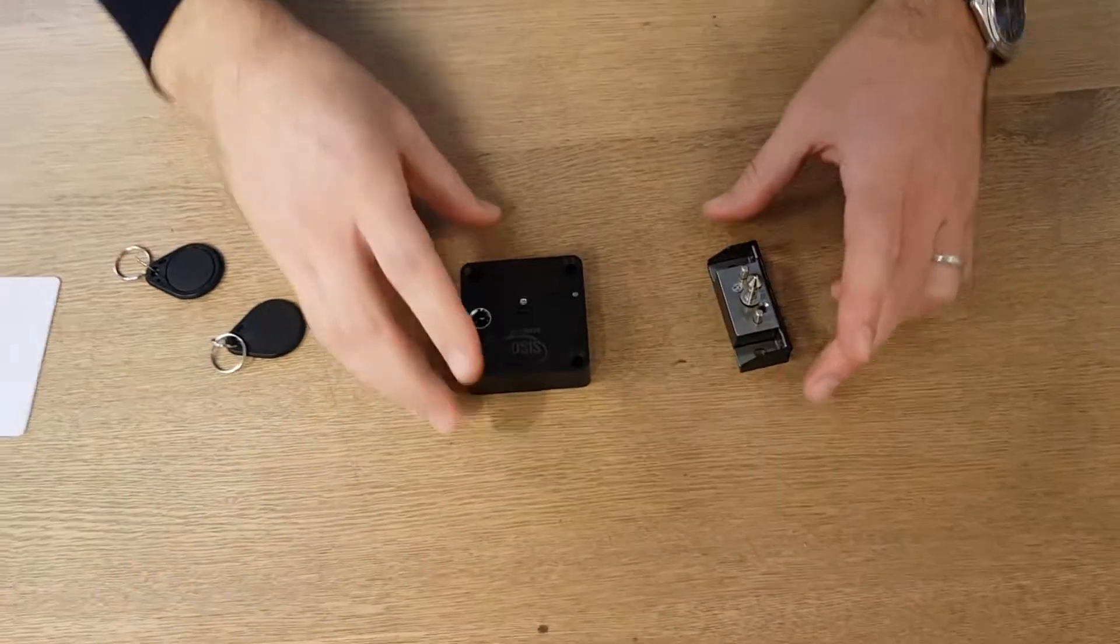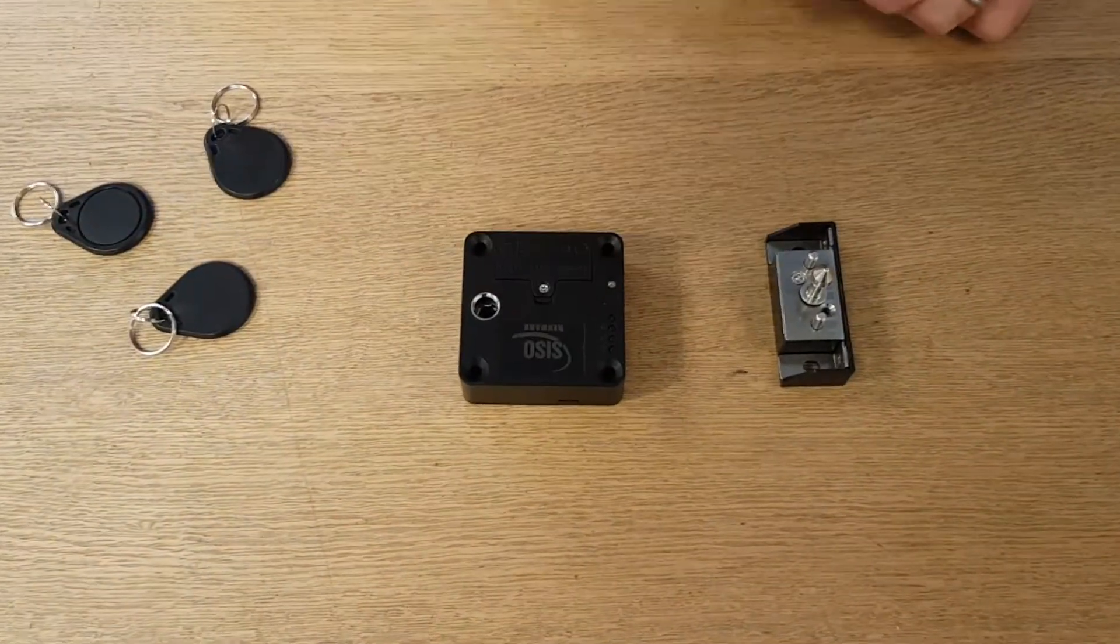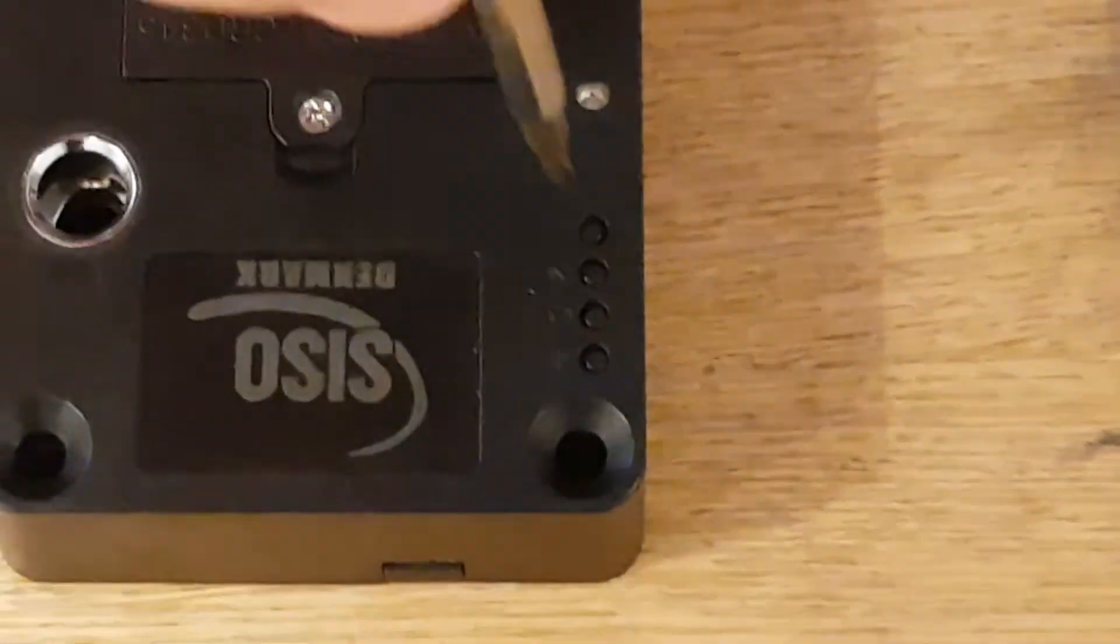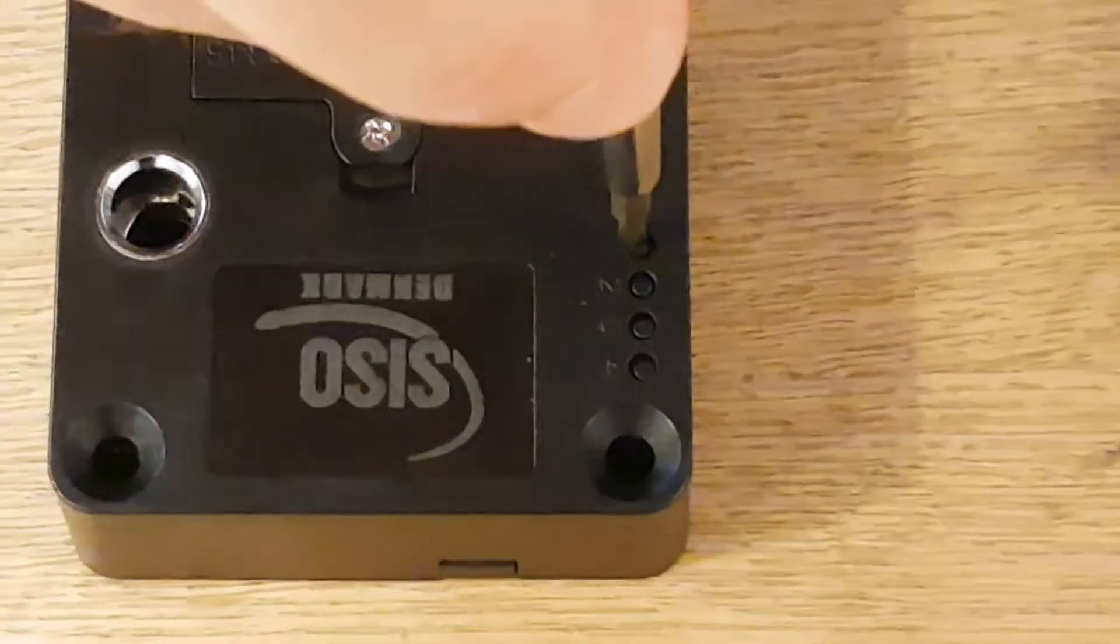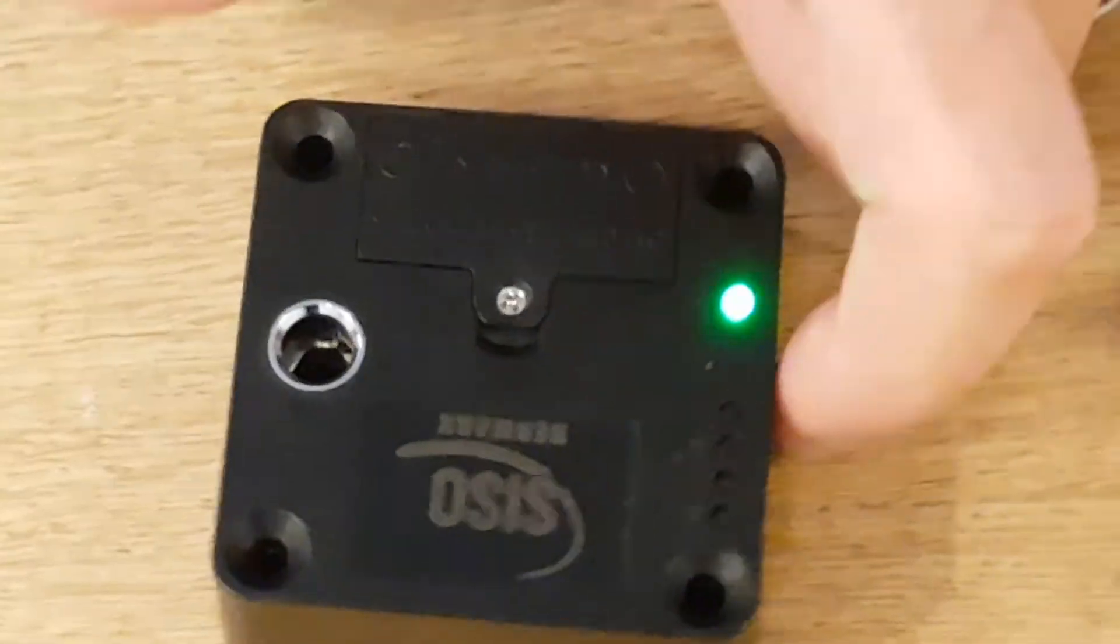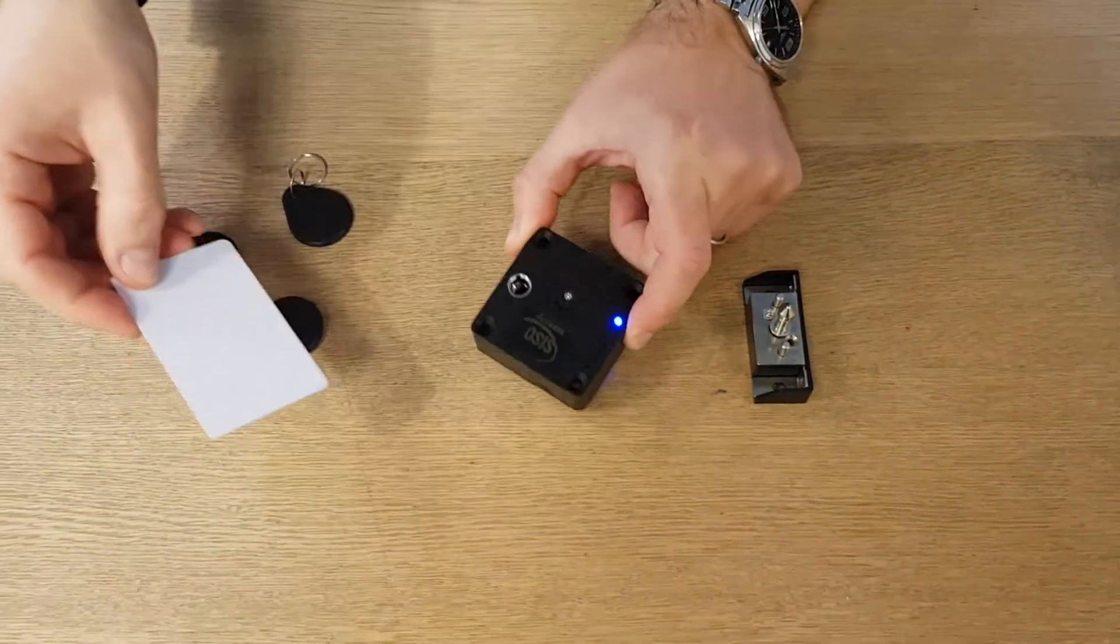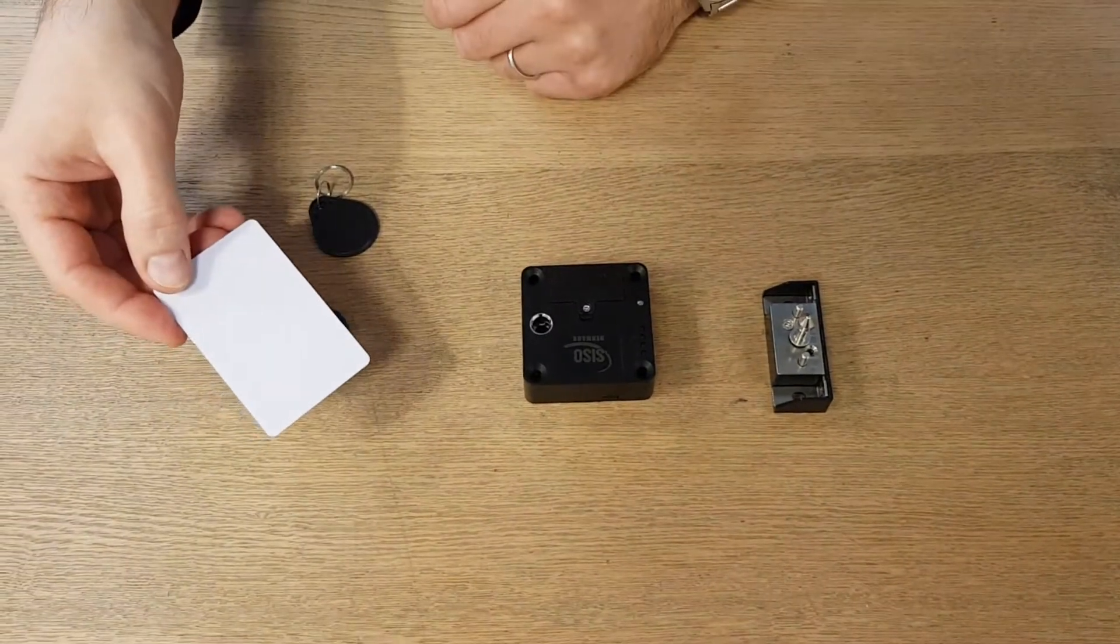Okay so back to programming a programming card. You need to push button number one. So we push button number one and it will start flashing green, and in that mode you can take a card and then you have programmed a programming card.